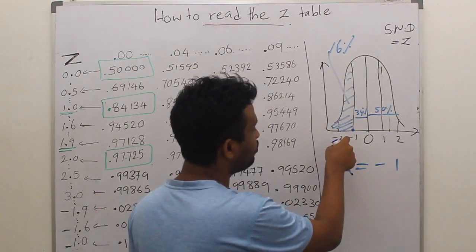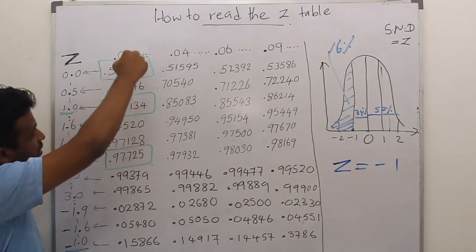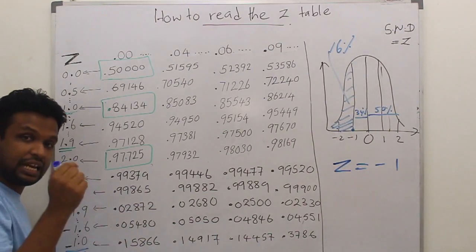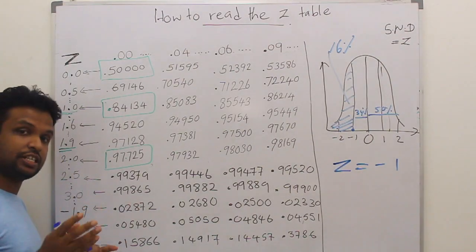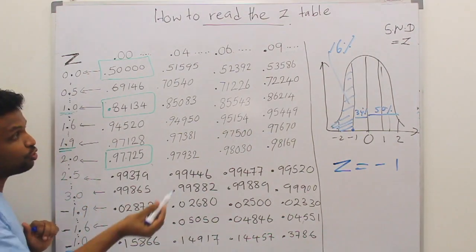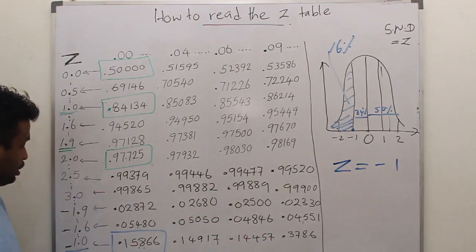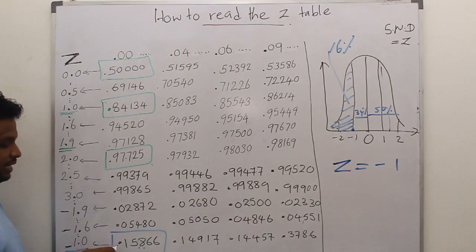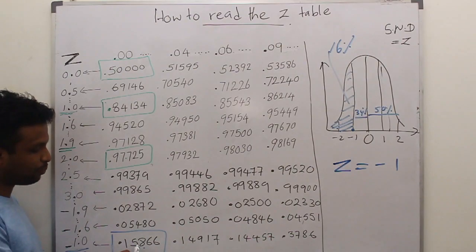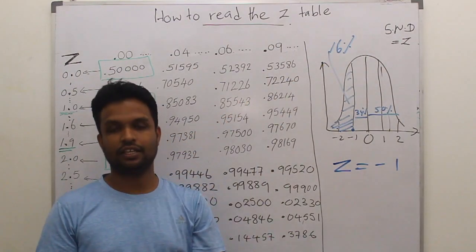So this should be around 16% of the observations. Let's see what will happen at minus 1. This minus 1 here and we are getting 0 from there because we are interested in minus 1.0, not minus 1.1 or 1.2. So it should be approximately 16%. The Z score is minus 1.0 and the area under the curve is 0.15866 or 15.86%, which is approximately 16%.